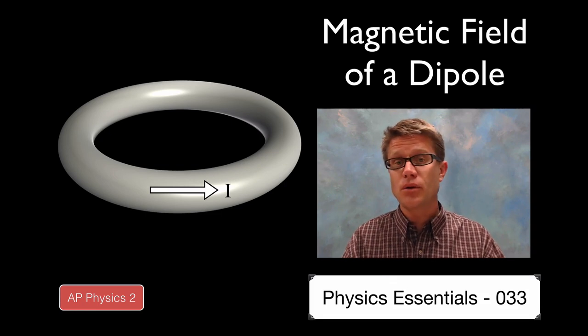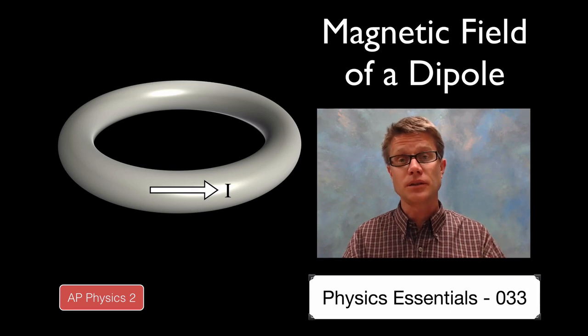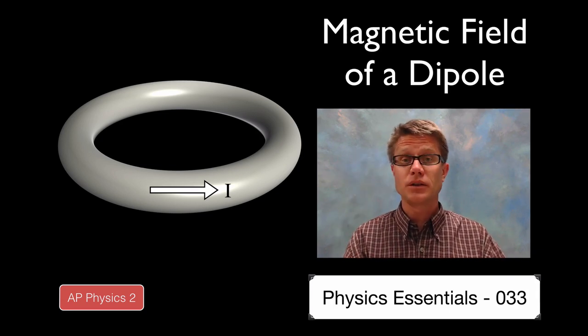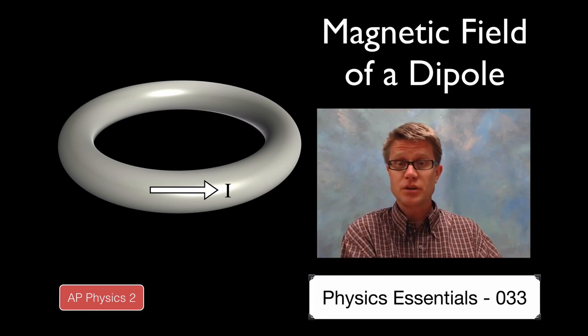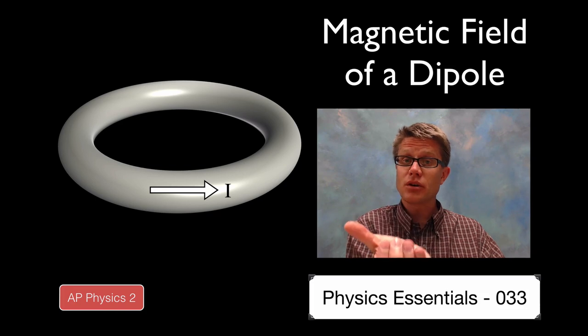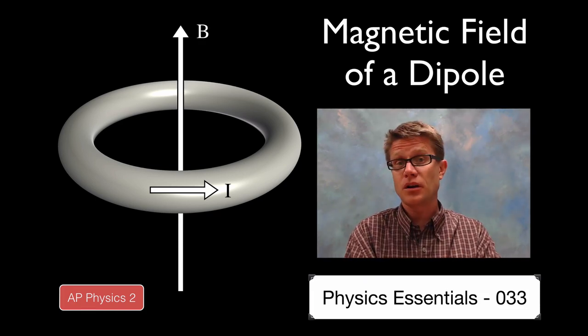We learned in the last video that if you ever have current moving through a wire we're going to create a magnetic field. So let's use that right hand rule to figure out where the magnetic field is coming. I'm going to grab that loop just virtually. And then as I point my thumb in the direction of the current, the magnetic field is going to come up right through the middle. And so that would be our magnetic field.